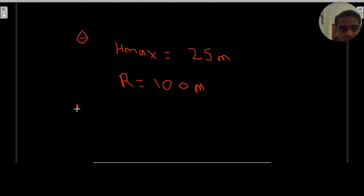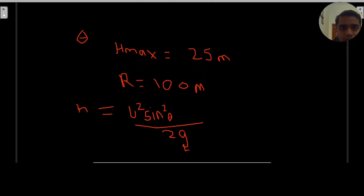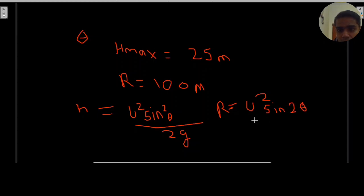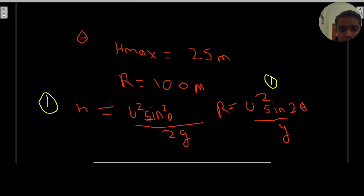We know that height H is given by u² sin²θ / 2g (equation 1). And range is given by u² sin2θ / g (equation 2). Now we will divide equation 1 by equation 2.